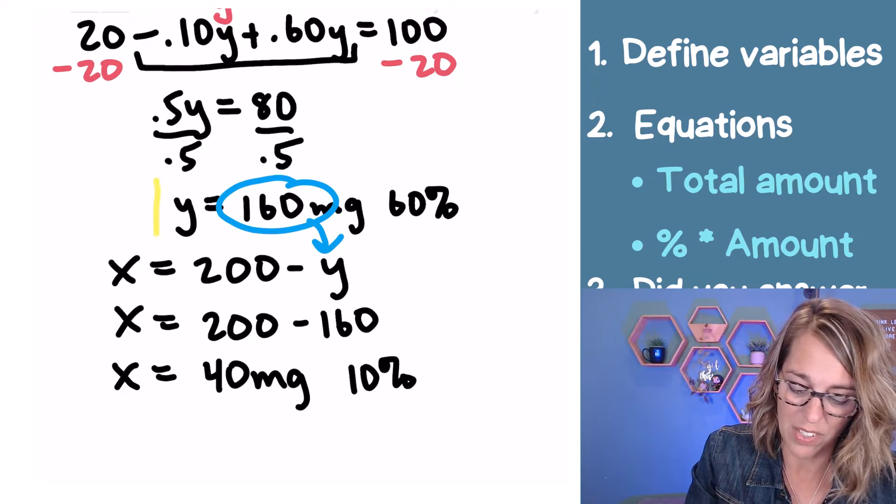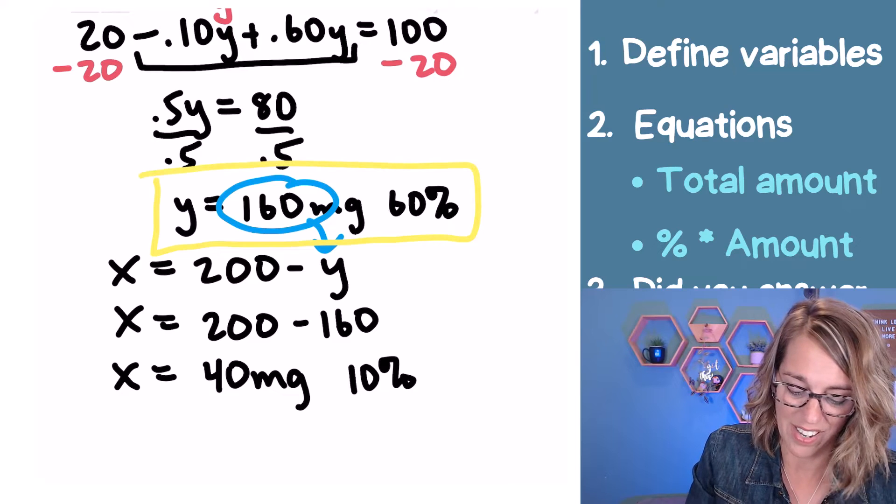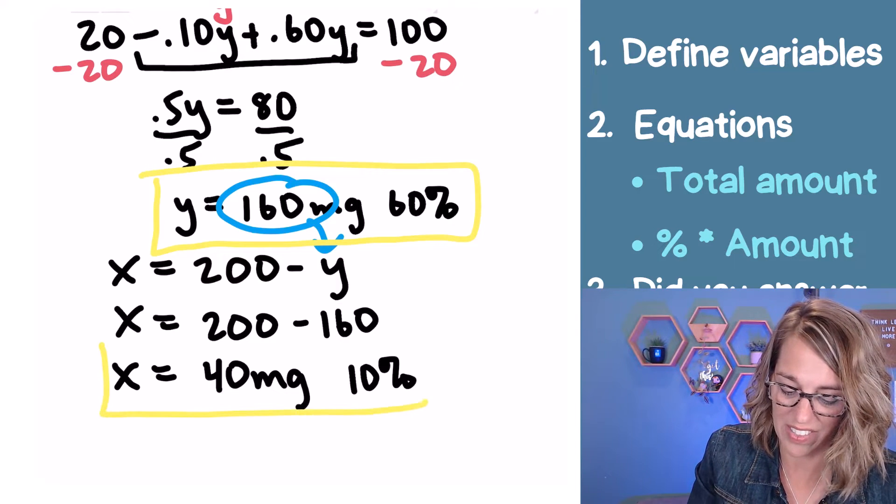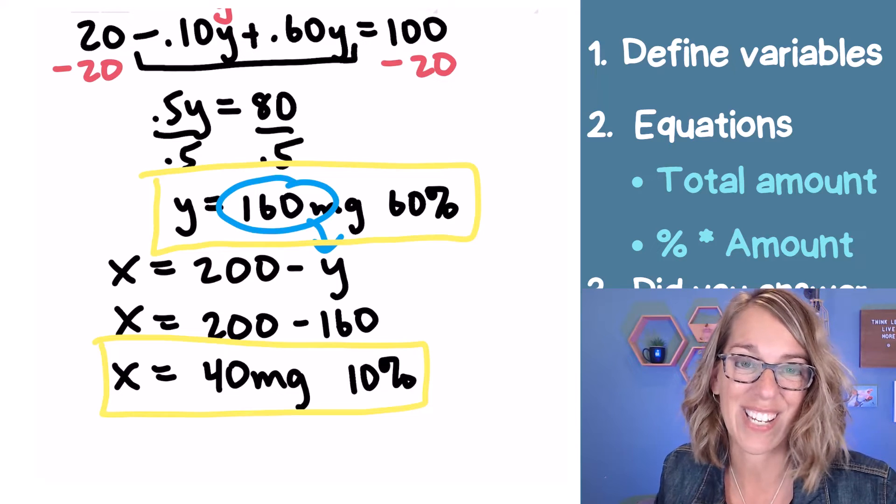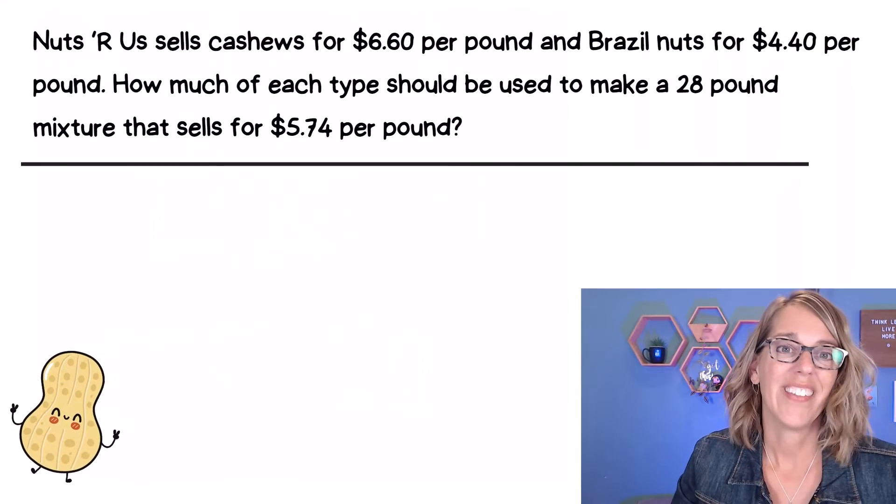So we really have two pieces to our answer. We've got the Y and the X, 160 and 40. In this one, we've got some nuts that we're mixing.